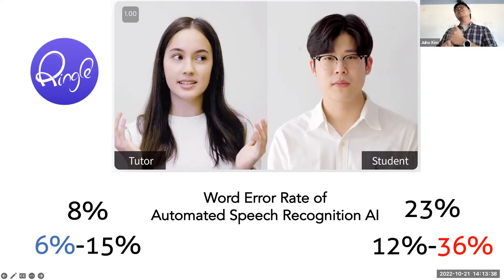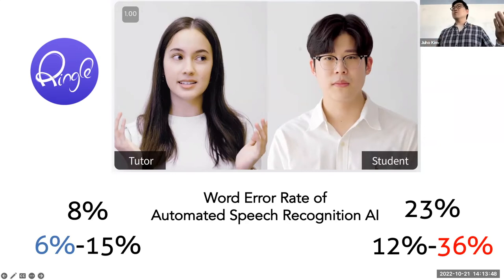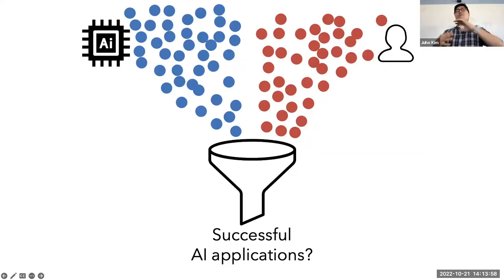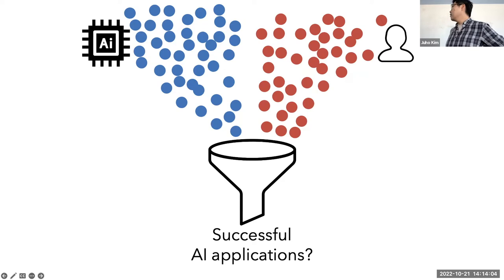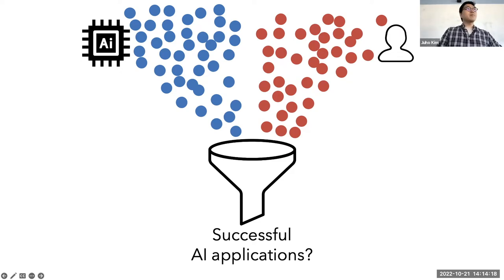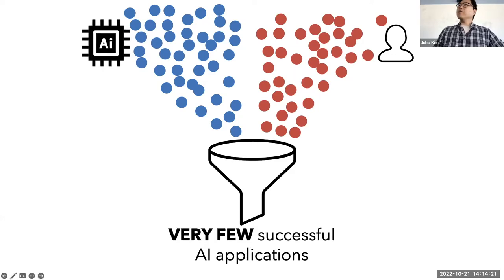Both of these cases show interesting interaction dynamics that aren't the most immediate thing you think of when applying AI to education. There are lots of AI technologies and users who want to use them, but are we seeing many successful AI applications? My answer is: very few actually succeed. We need to understand why that's the case.